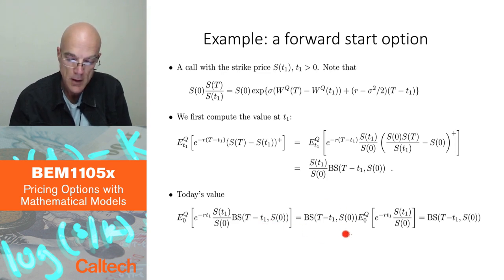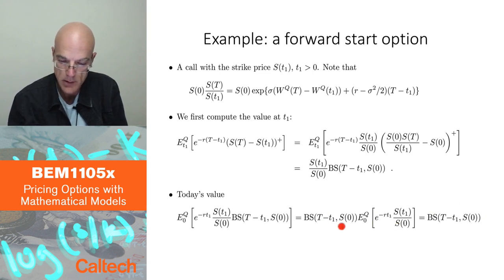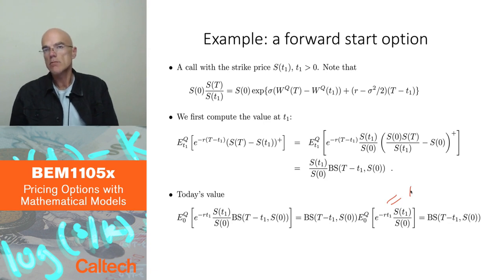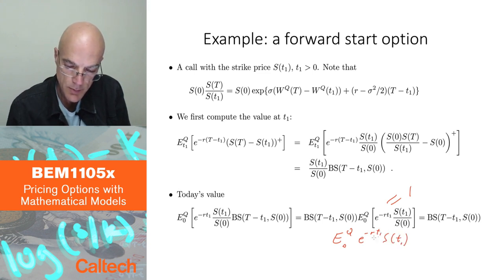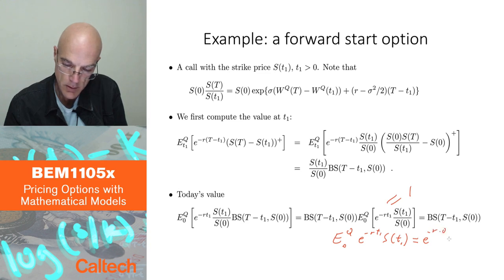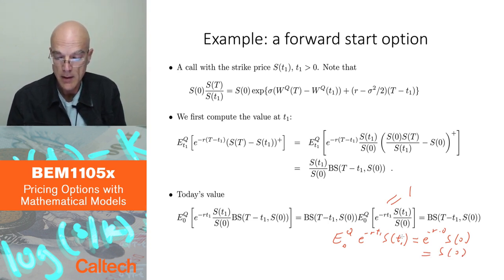Then I have the expectation under Q at time zero of e^(−r·T1) · S(T1)/S(0). I claim this whole thing equals one. Why? By the martingale property: the expectation under Q at time zero of e^(−r·T1) · S(T1) equals e^(−r·0) · S(0), since the discounted stock price is a martingale. Now e^(−r·0) = 1, so the whole thing is just S(0). That S(0) cancels the S(0) in the denominator, and we get one — just the martingale property.